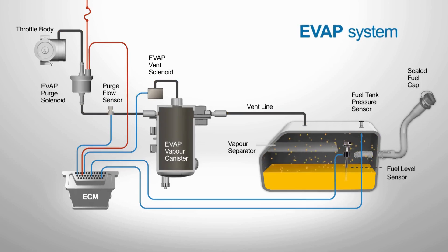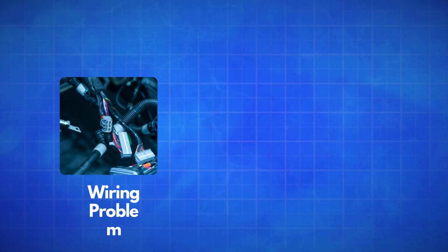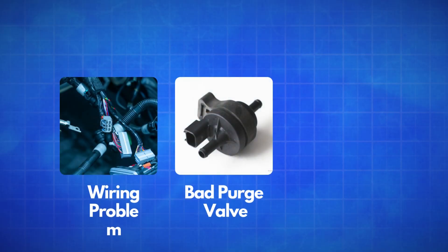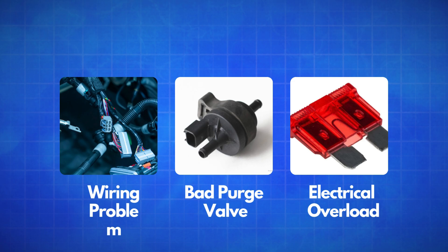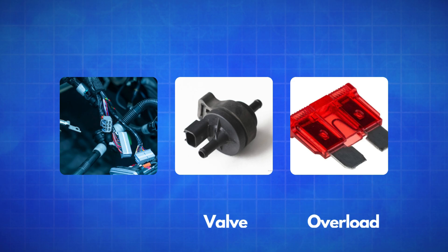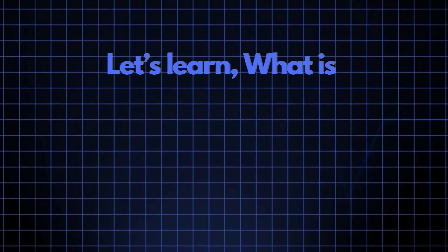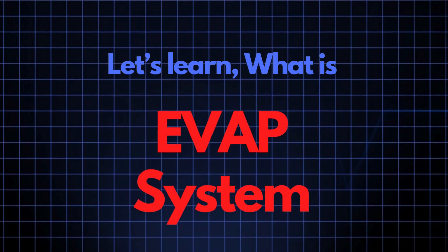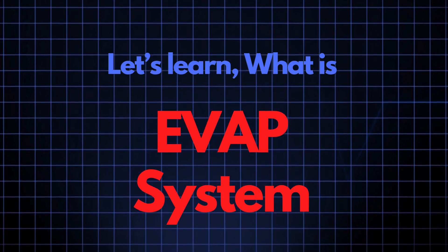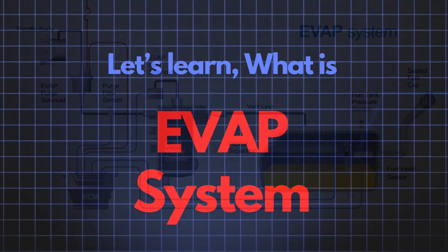But when there's a problem — like a broken wire, a faulty purge valve, or even an electrical overload that causes a short circuit — it can prevent the valve from working properly. Now let's take a quick look at how the EVAP system works.